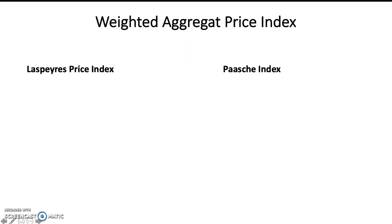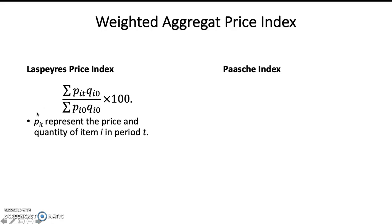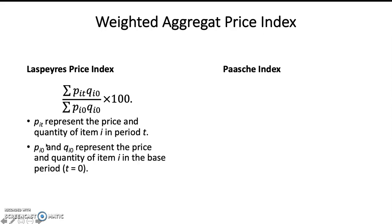Now let us see the most popular formulas to calculate the weighted aggregate index. The first is the Laspeyres Price Index, which uses the base period quantity as the weight. Here we see that it uses the base quantity Qi0 as the weight. PiT represents the price and quantity of item i in period t, and Pi0 and Qi0 represent the price and quantity of item i in the base period, where t equals 0.